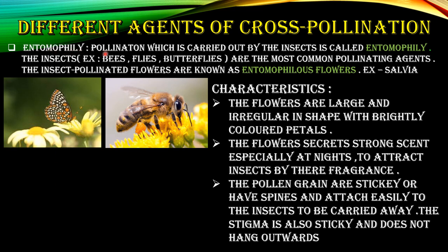Entomophily means the pollination carried by insects. You can see in the picture the insects are sitting on the flower, collecting pollen grains from one flower to another, as the body is sticky, feathery, or hairy. Flowers pollinated by insects are called entomophilous flowers. These flowers are large and brightly colored, scented to attract insects, and pollen grains are sticky or have spines so they can easily attach to the body of insects.